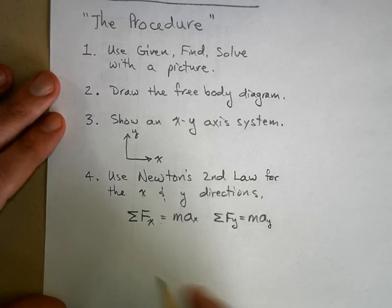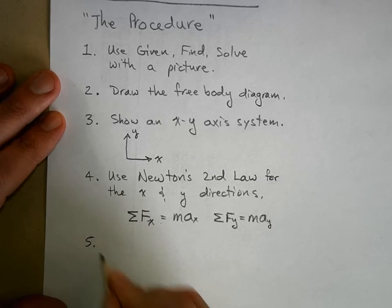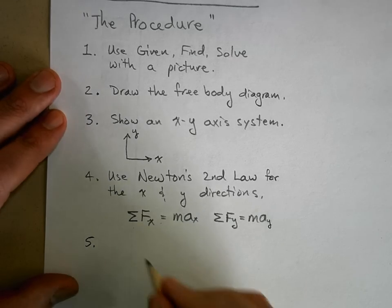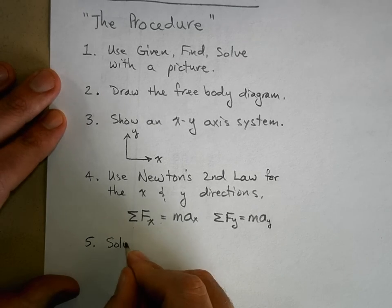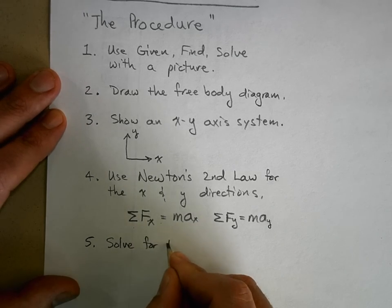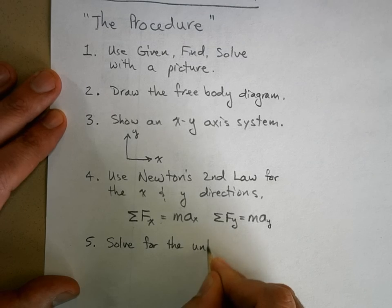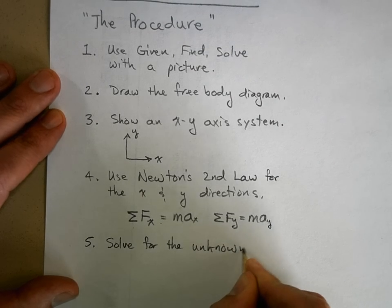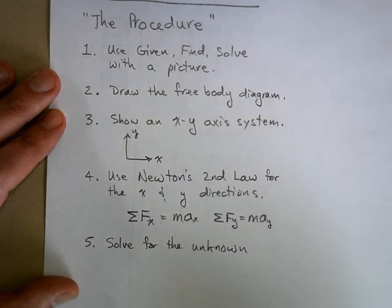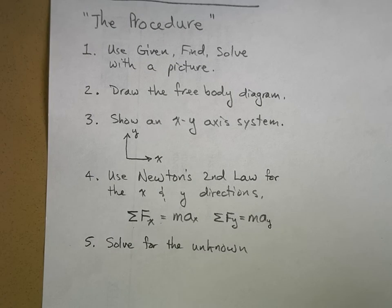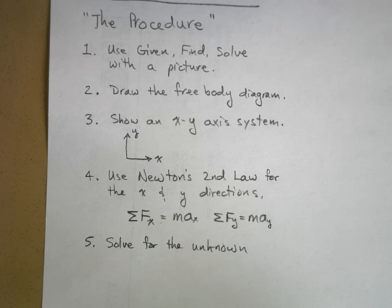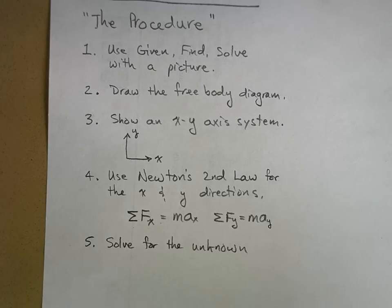Step five is to solve for the unknown. Once you've done steps one through four, you're pretty much done doing physics. After that you're just cleaning it up with math to get to the right answer. Using this procedure will let you solve lots of problems.